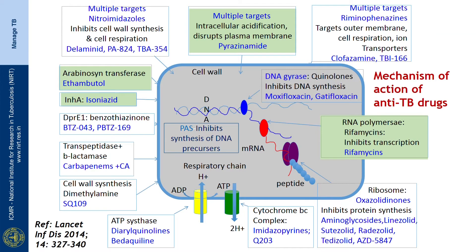This figure clearly explains the mechanisms of action of anti-TB drugs. Isoniazid and ethambutol prevent the formation of the cell wall. Pyrazinamide disrupts plasma membrane formation. Quinolones act at the DNA gyrase level, inhibiting DNA synthesis. Rifampicin acts through RNA polymerase, inhibiting transcription. The newer drug bedaquiline acts at the ATP synthase level.